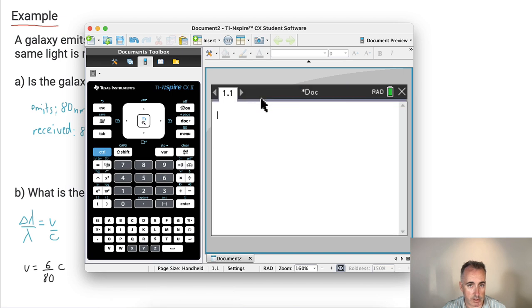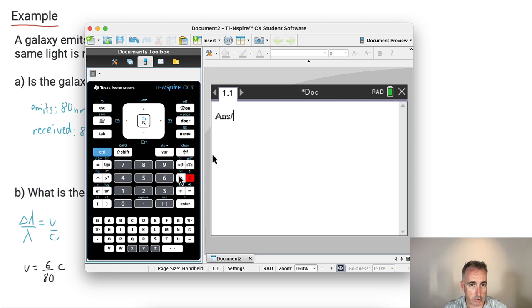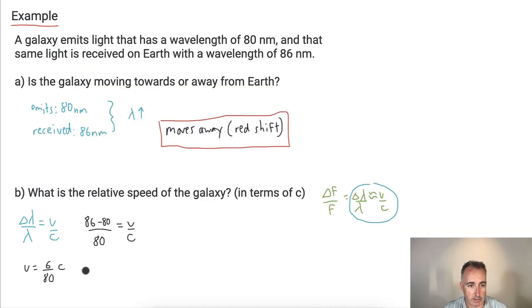Let's figure that out at least. I want it not as a fraction, I want it as an actual number here. So I'll do 6 over 80, and give me the answer. So it's 0.075. That means V equals 0.075 C.